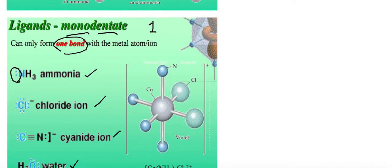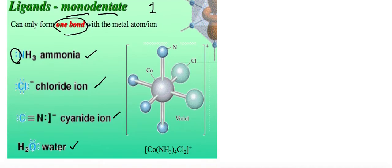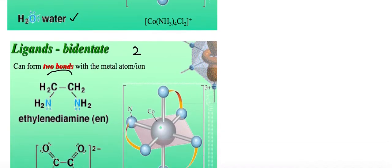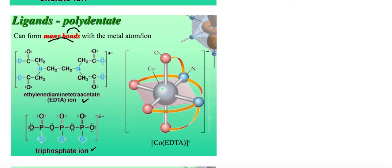There are different classifications of ligands depending on how many bonds they can form with the metal ion. Monodentate is the most common, you're required to know those examples. Bidentate is two bonds, and polydentate is anything more than two.